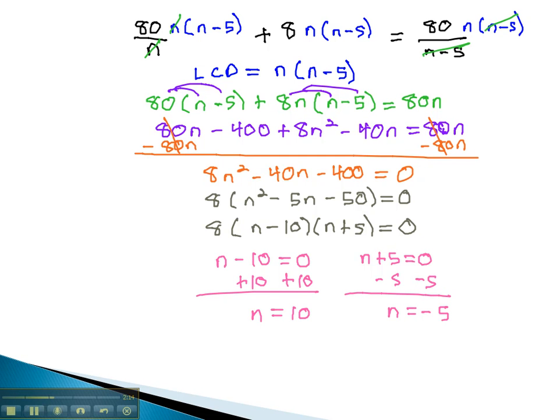If you recall from the previous video, n represents the number of college students who agreed to buy the couch. We couldn't have a negative number of students, so we cross out negative 5. There must have been 10 students in the original group.